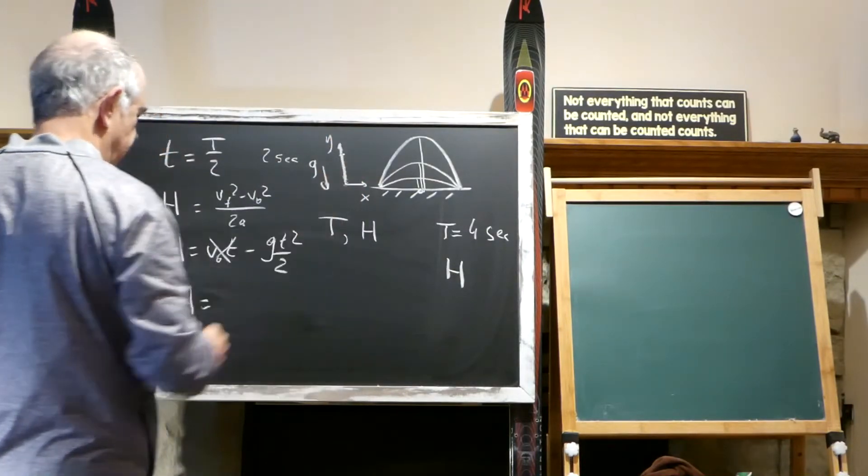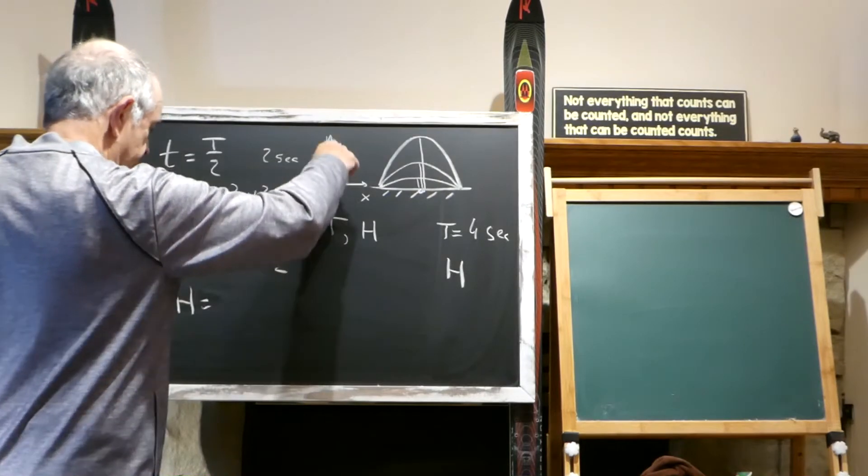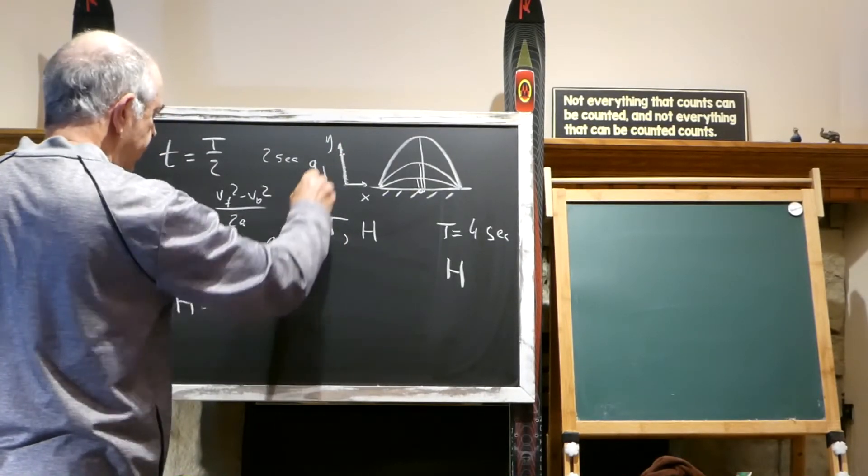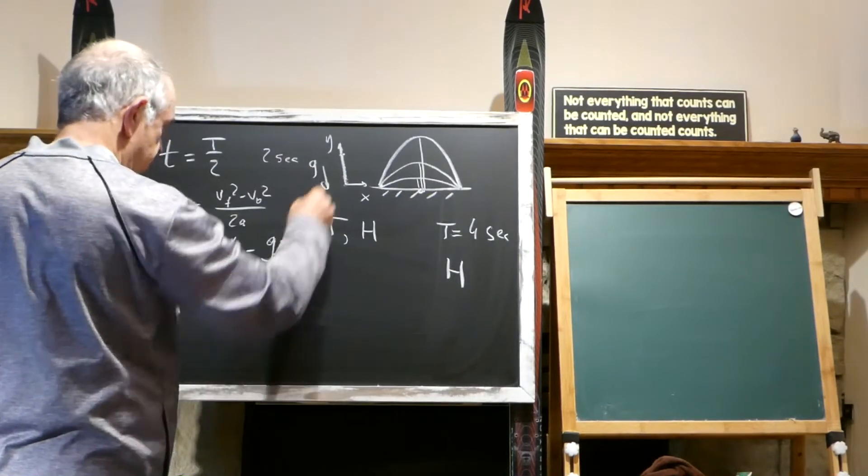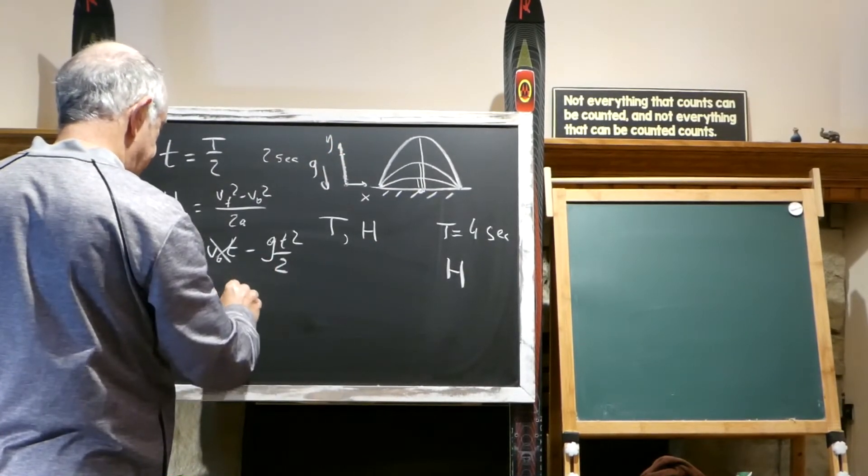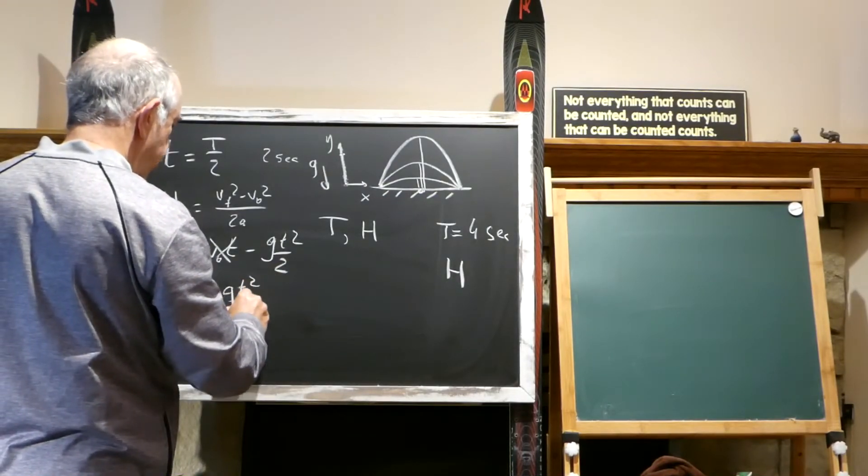On the way down, height equals initial speed going down in the vertical direction, which is zero. So nothing here. Acceleration goes with us. We go from here to here. So this is the distance: G T squared over 2.